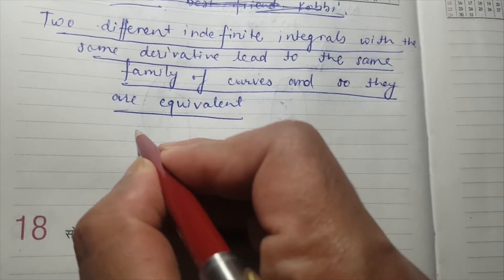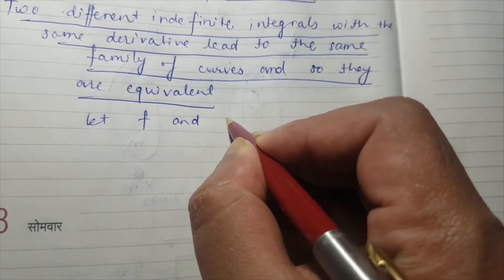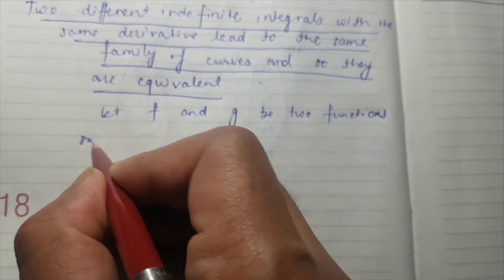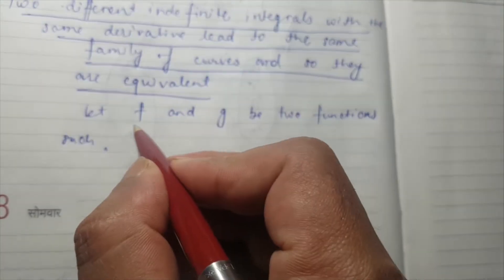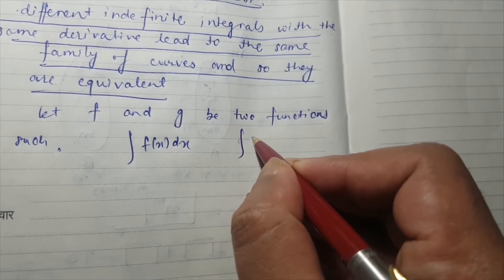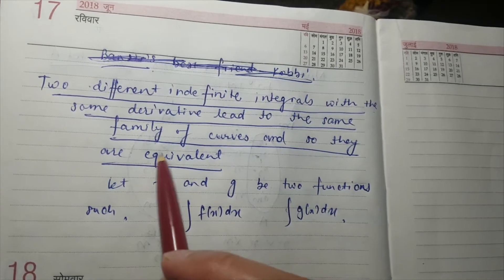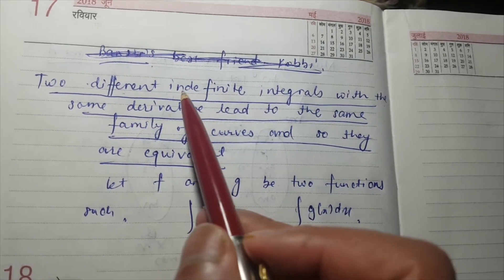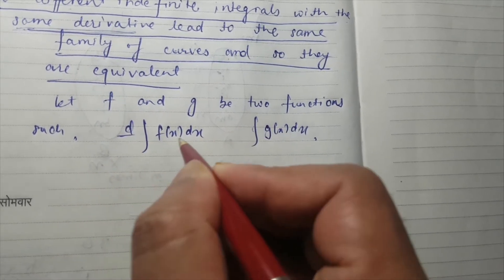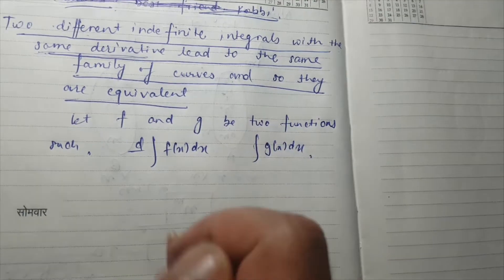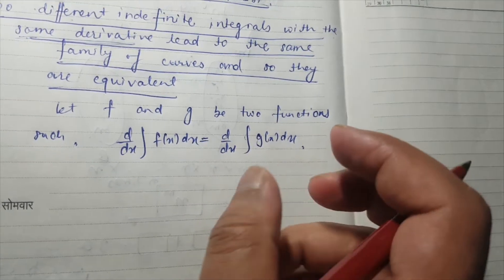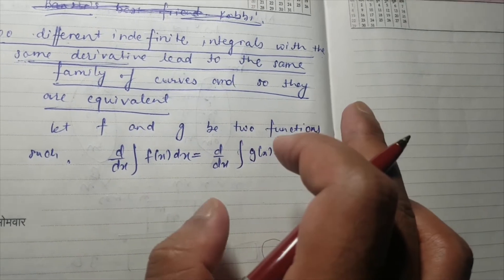Let f and g be two functions. The integral of the first function will be the integral of f(x) dx, and the integral of the second function will be the integral of g(x) dx. The key assumption is that these two different indefinite integrals have the same derivative — that is, d/dx of the first integral equals d/dx of the second. Finally, we have to prove that these two integrals represent the same family of curves.